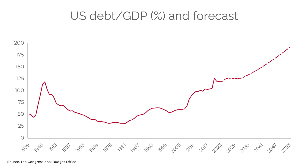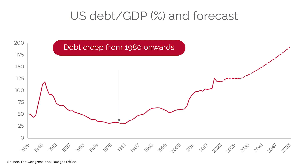Debt is not necessarily a bad thing — it can be good if used productively. A clean way to measure this is the ratio of U.S. debt to GDP, and a good sign would be seeing this ratio go down. Unfortunately for the U.S., it's been going up. In 2024, the ratio was 120% — a level last seen since the end of World War II. The U.S.'s own Congressional Budget Office expects deficits to continue straight through to 2053 and for that ratio to reach 200%. It's worth noting those CBO forecasts are conservative — no recessions, pandemics, or financial crises are included.